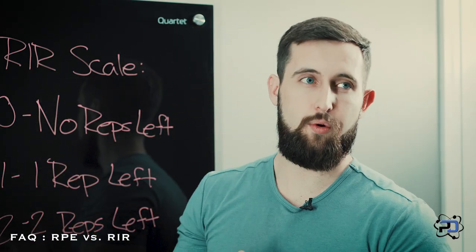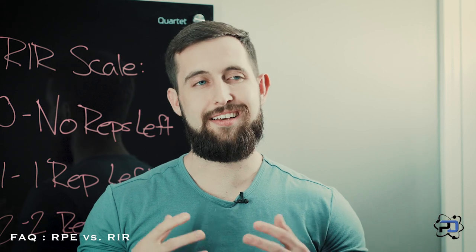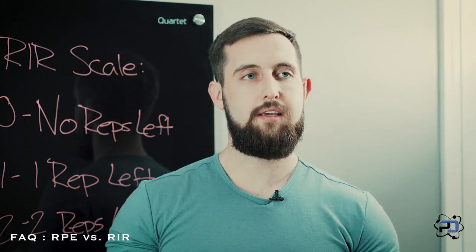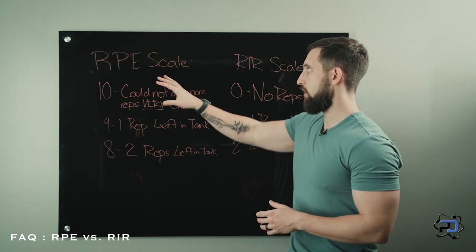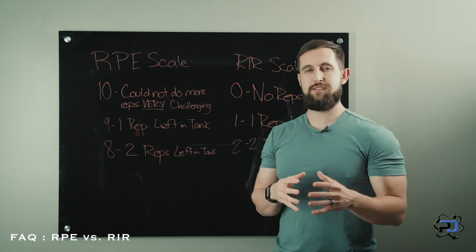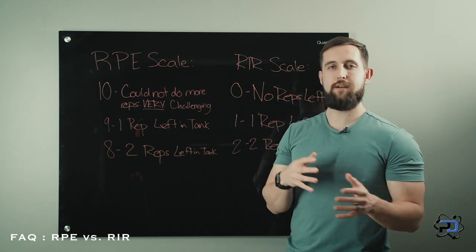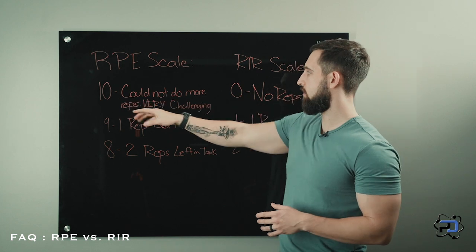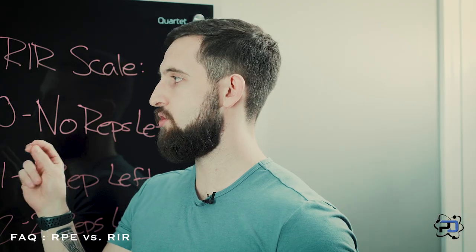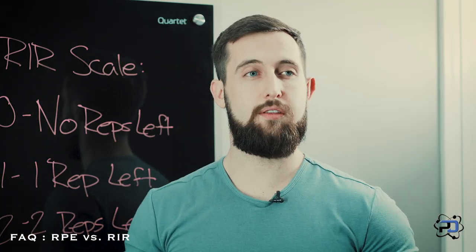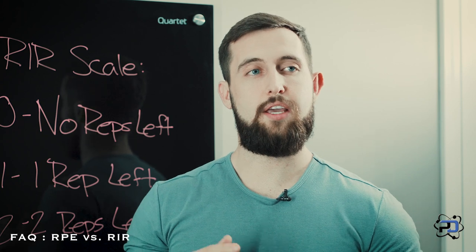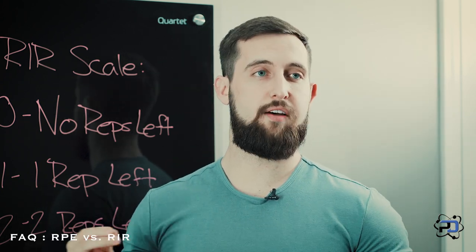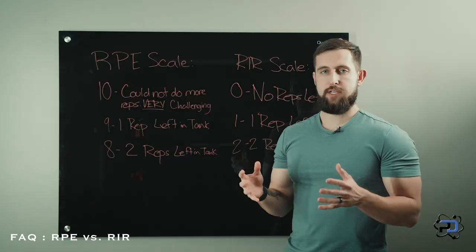Both these tools are going to assist you in understanding the intensity at which you are training. When we look at the RPE scale, it is going to be a scale from 1 to 10, with 10 signifying that you could not do any more repetitions at all — the set you just completed was very challenging and you could not have moved the bar one more time.